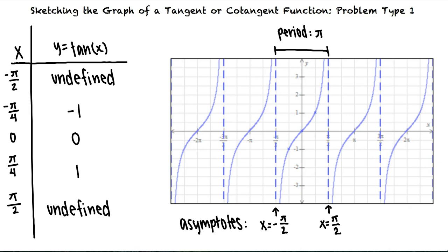Does the graph of a cotangent function look similar? Tangent and cotangent functions have similar shapes but there are some key differences.